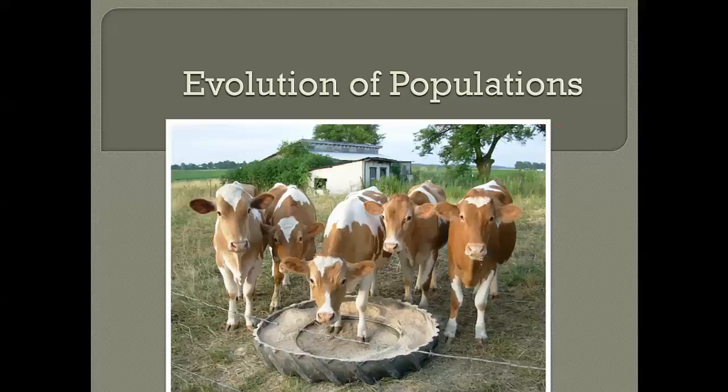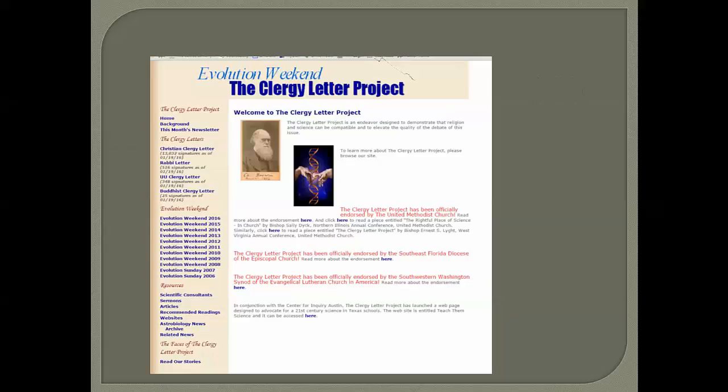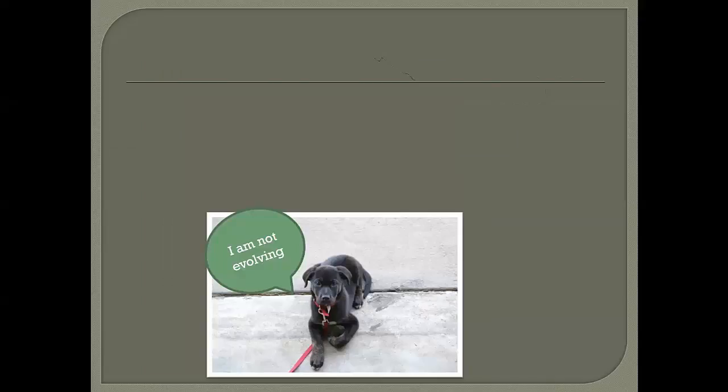Chapter 23 covers the concept of micro-evolution, the evolution of populations. Micro-evolution is small-scale evolution, evolution within a population. We're not talking about making new species here; we're talking about evolution within a species.